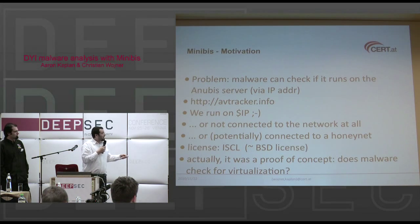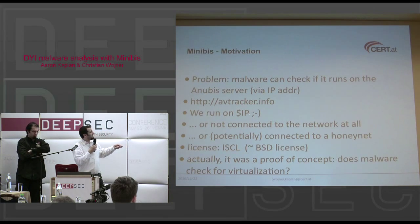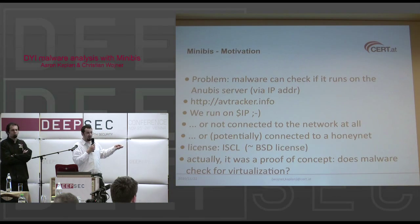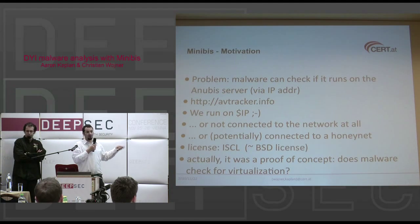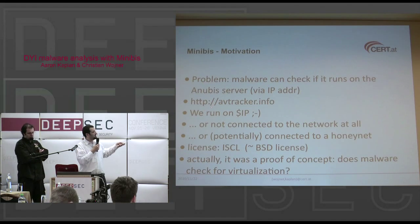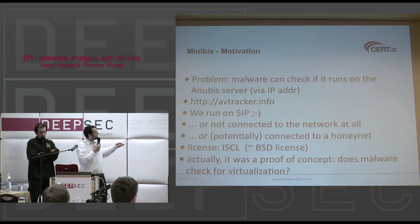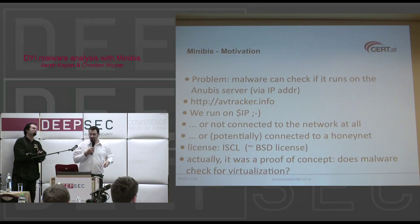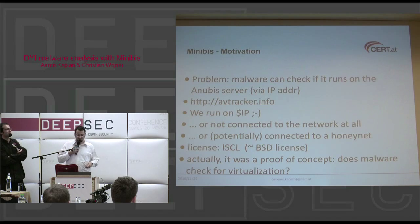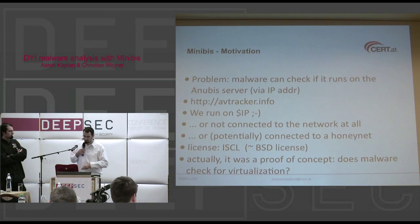The advantage of an offline version is that the malware cannot reach out to a specific IP address and then stop working. This was shown to be a very feasible attack by someone from close to Vienna who wrote avtracker.info — people were upset because it gave malware authors a tool to check if they were running under Anubis. With the offline version, of course, that's not possible.